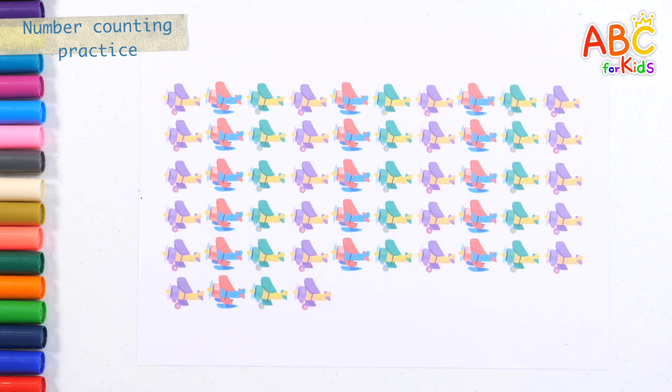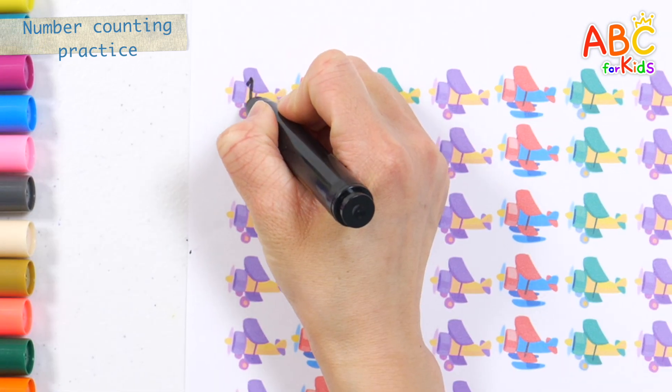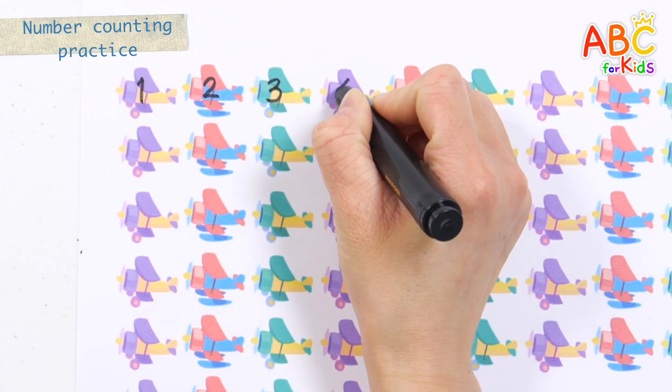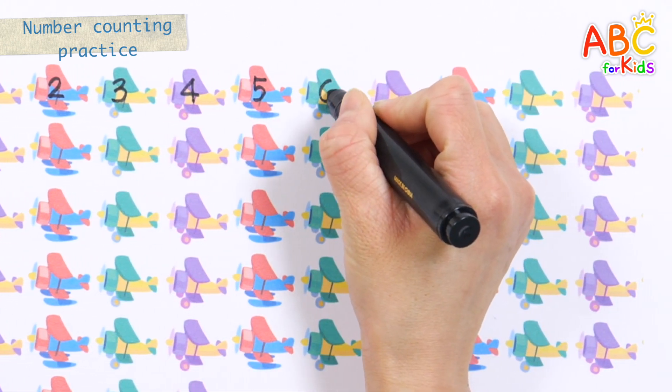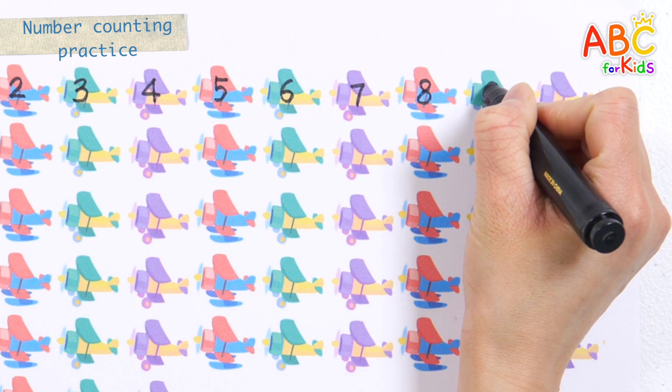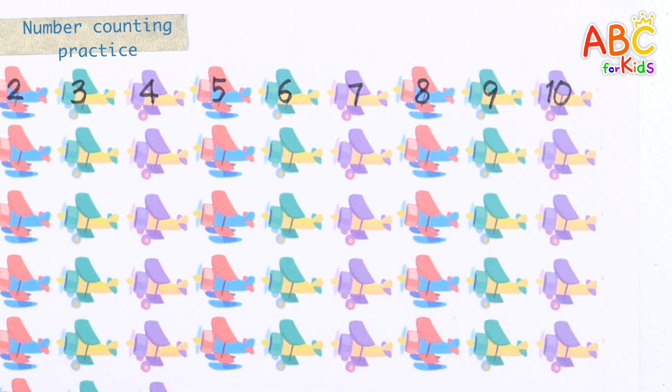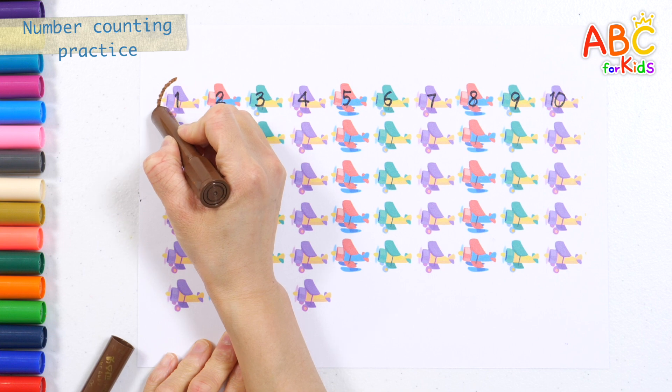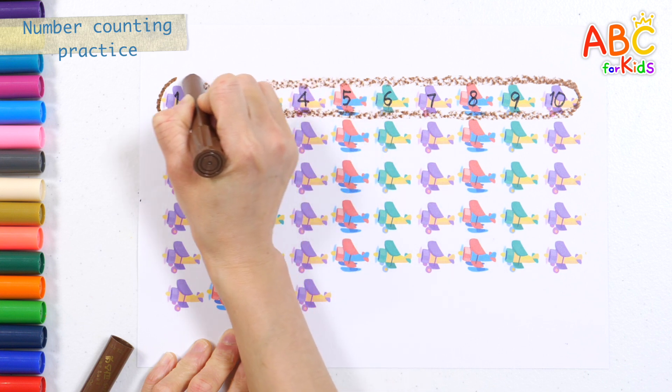It's an airplane! Shall we write a number on the plane in the first row? 1, 2, 3, 4, 5, 6, 7, 8, 9, 10. Let's group them by 10. 10.